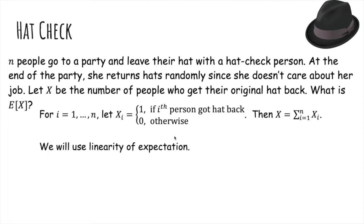We'll use linearity of expectation. The expected value of xi is one times the probability it's one plus zero times the probability it's zero because those are the only two values you can take on. And this is just the probability xi is one. And that's the probability that the i-th person got their hat back, which is one over n. As we said, it doesn't matter where you are in line.